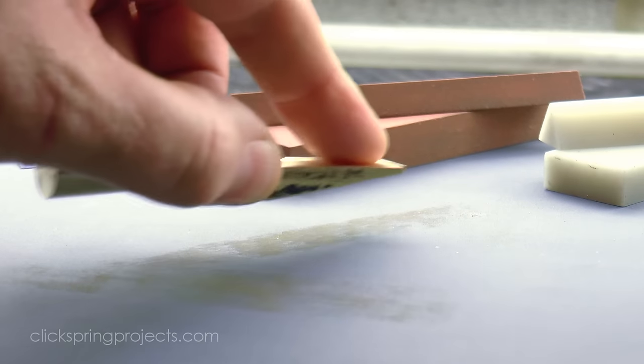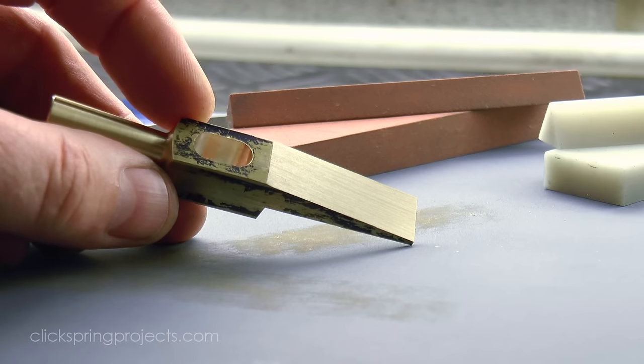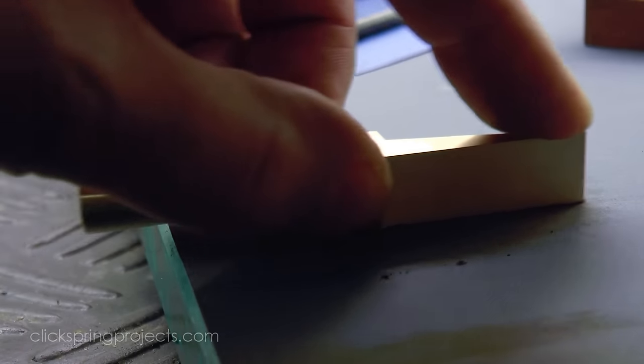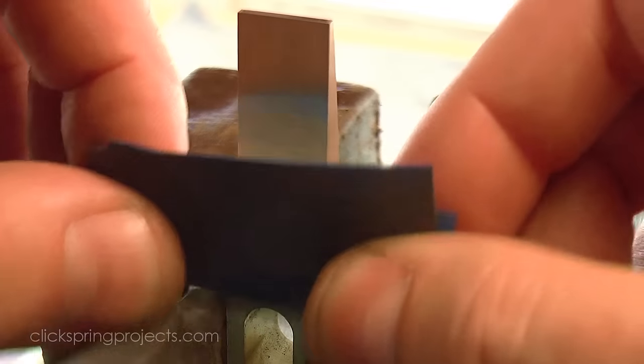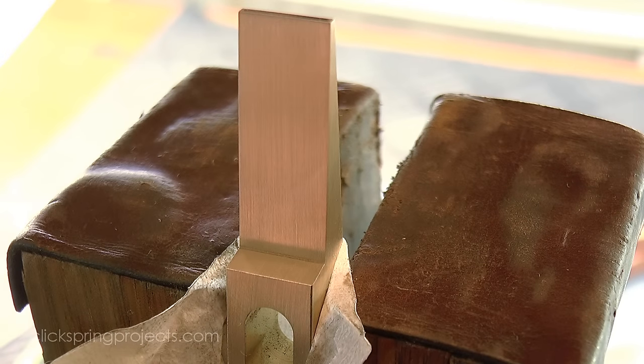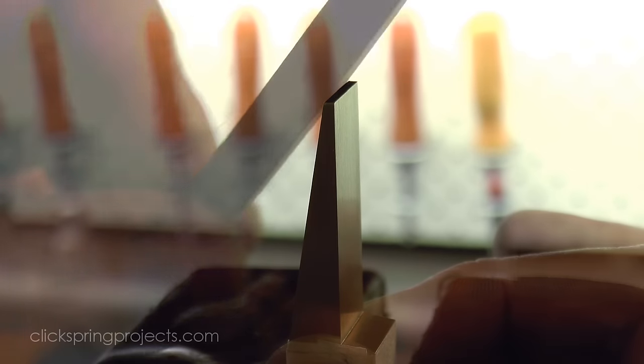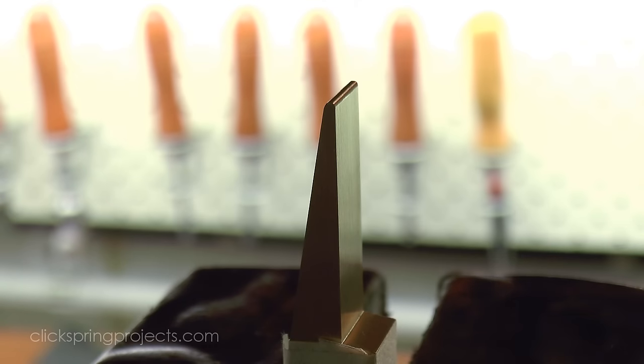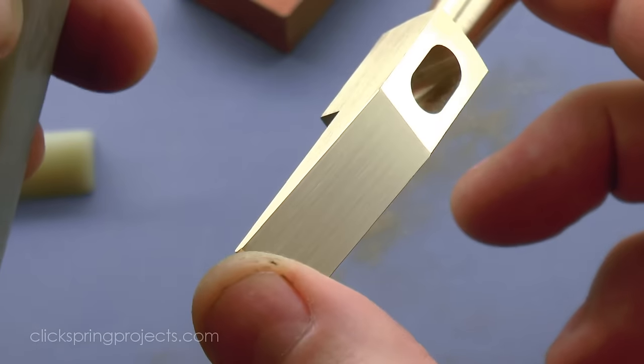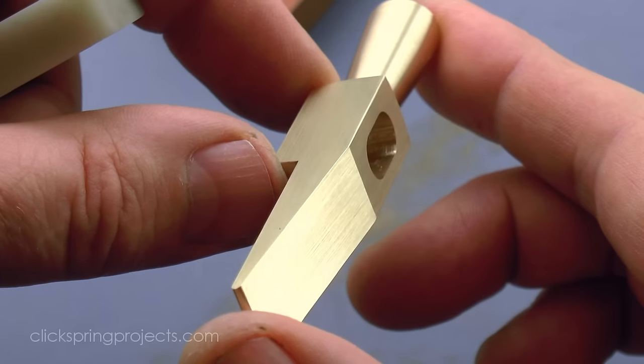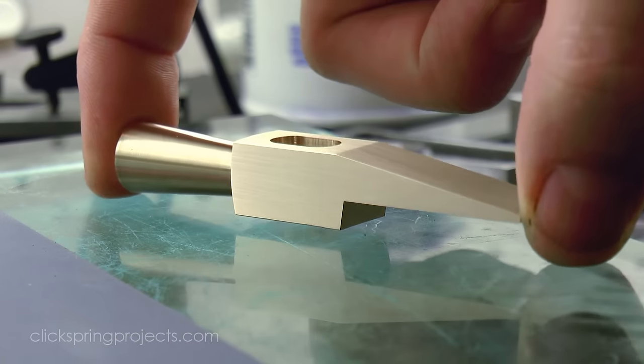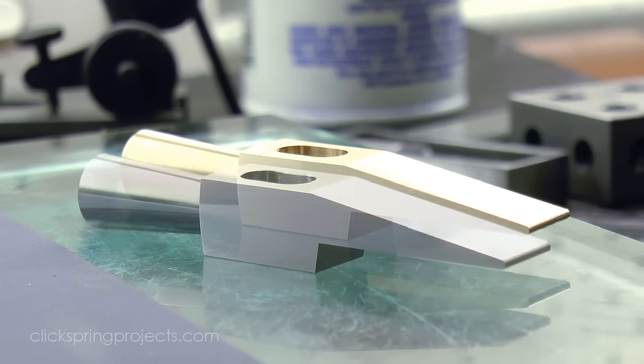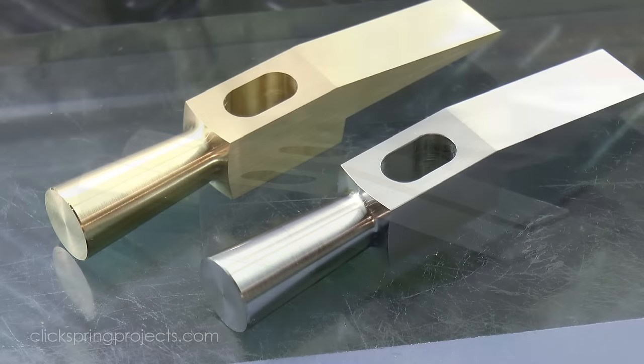After the machining is complete, the work can be taken to a final finish with abrasive paper and stones. That's the basic process, and it can be applied to the steel version without much variation, other than to add the step of heat treatment.